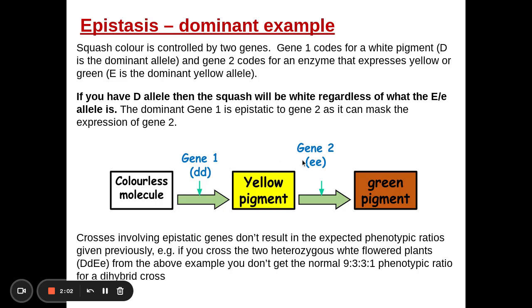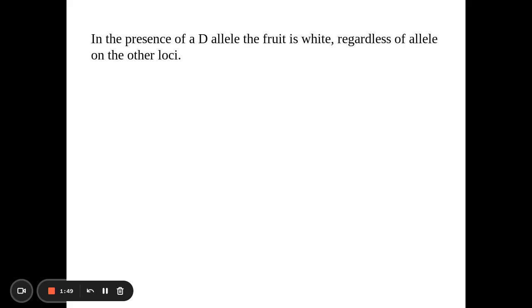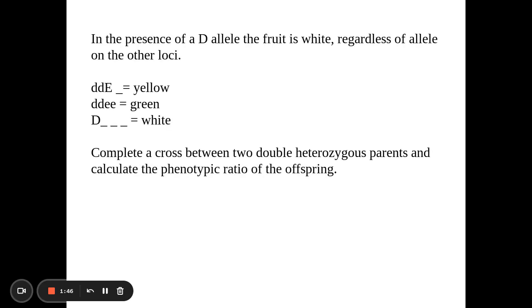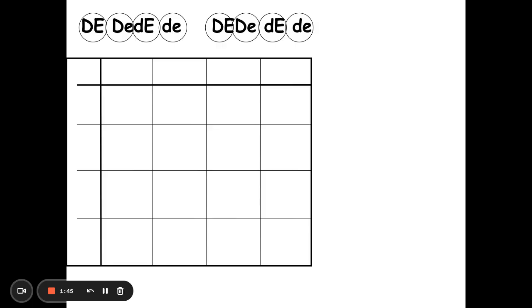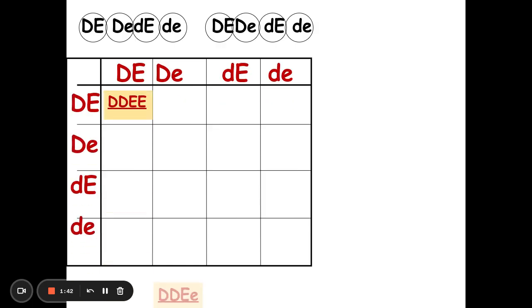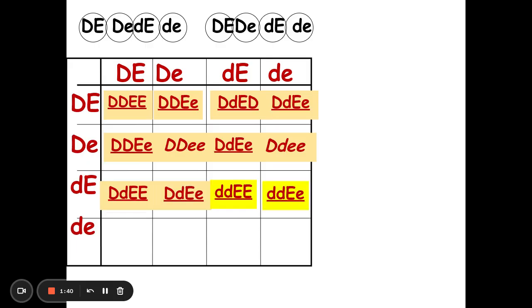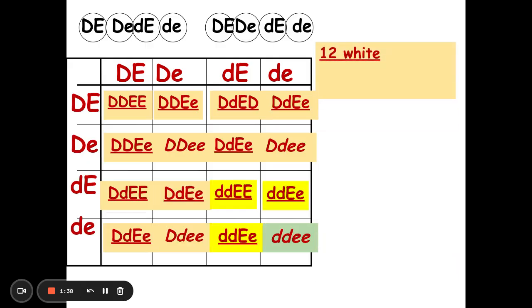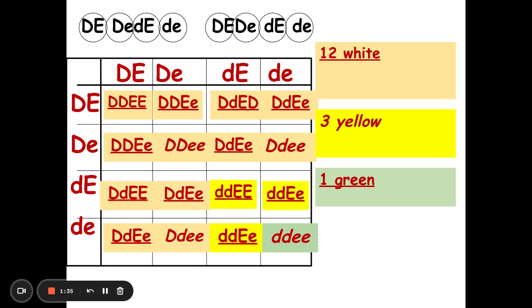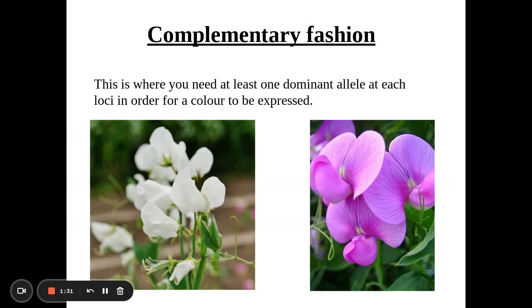If you want to pause the video and have a go at crossing two heterozygous individuals using the D and E genes, please do that now and work out the phenotypic ratio. Here is the example cross using the gametes put into the Punnett square. You should get 12 white to three yellow to one green individual — a 12:3:1 ratio.